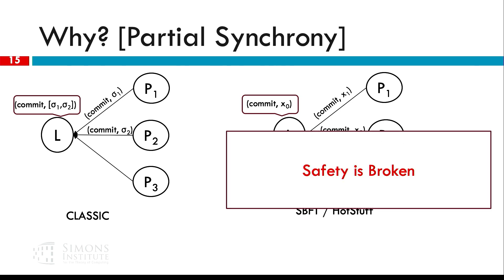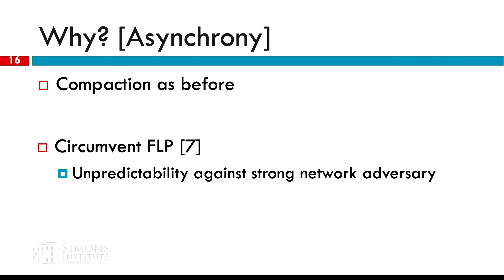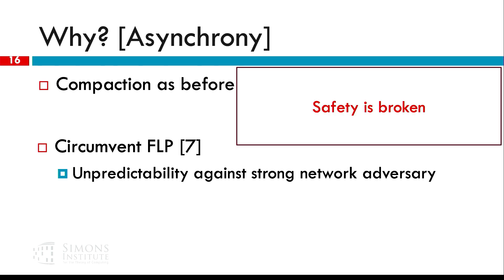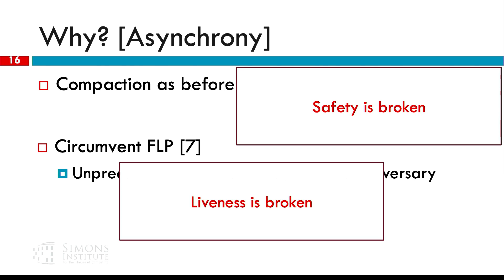If the dealer was malicious, safety is broken because he knows the actual threshold key. As a result, he can sign whatever he wants with the threshold key and convince everyone that something happened that actually did not. Similarly in the asynchronous case, we use it for compaction. If the dealer is malicious, safety is broken again. We also use it to circumvent FLP, because it produces randomness in the system — a strong common coin — which defends against the adversary reordering messages. Even if we don't want it for scalability in asynchrony, we actually need it for liveness. As a result, it's very important in the asynchronous case.